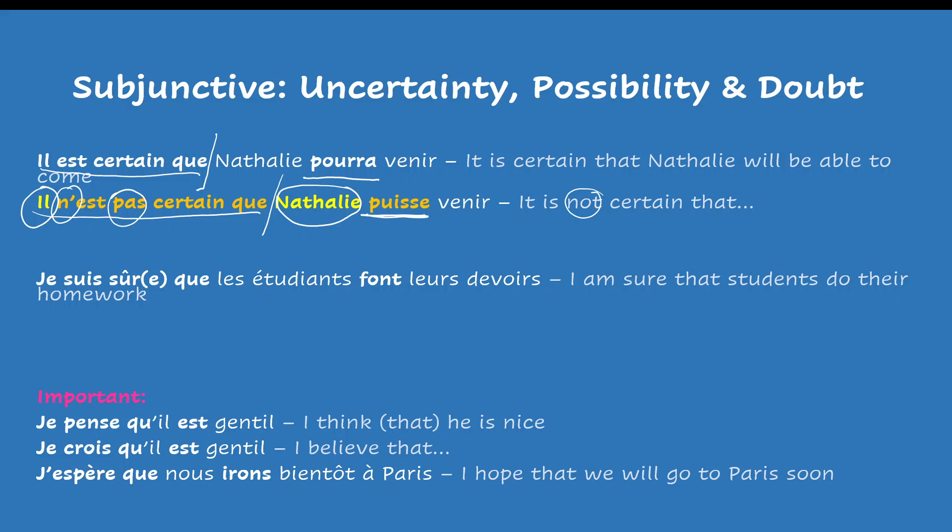You need an expression of uncertainty, possibility, or doubt that will trigger the subjunctive, but you also need a second condition: two different subjects — two verbs, two different subjects. Otherwise, you will need to use the infinitive.